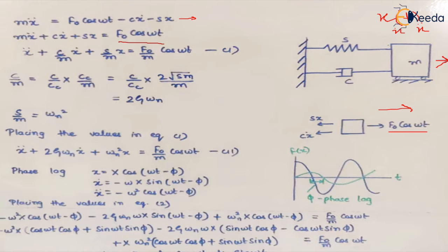Dividing the whole equation by m we get: ẍ + (c/m)ẋ + (s/m)x = (F₀/m)cos(ωt), where c is the damping coefficient and s is the spring stiffness.